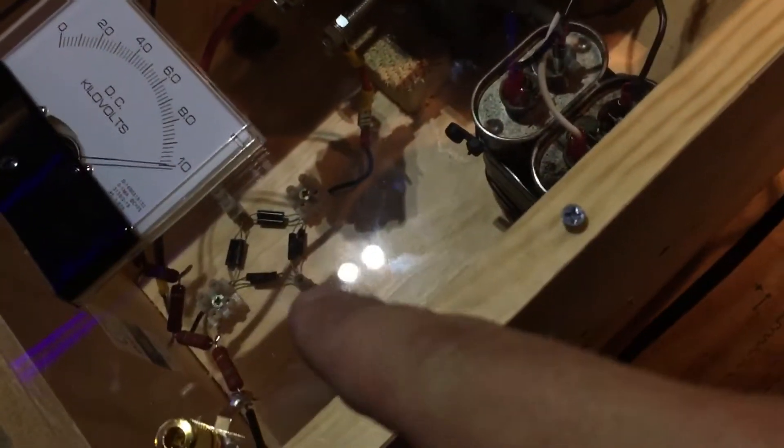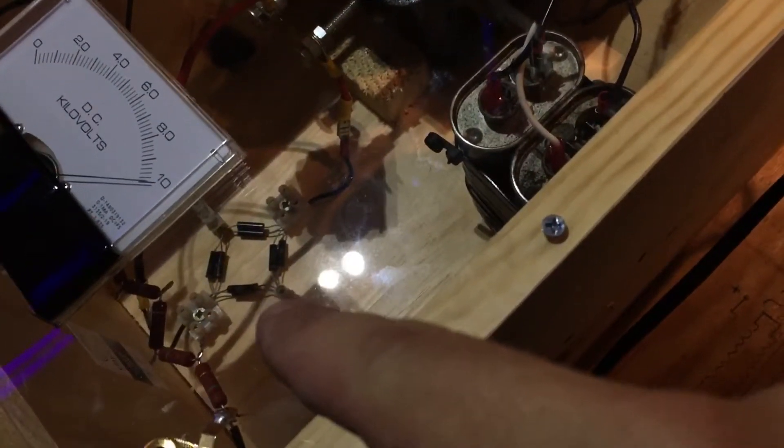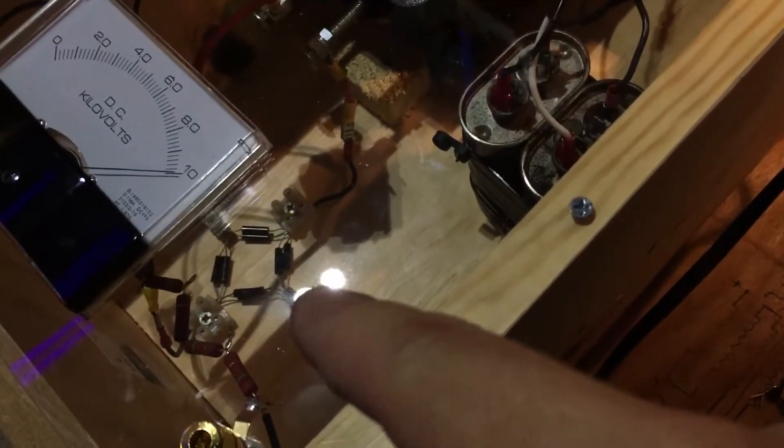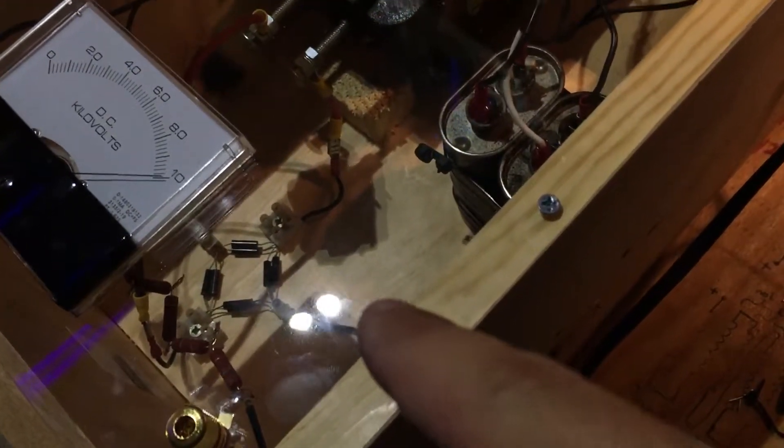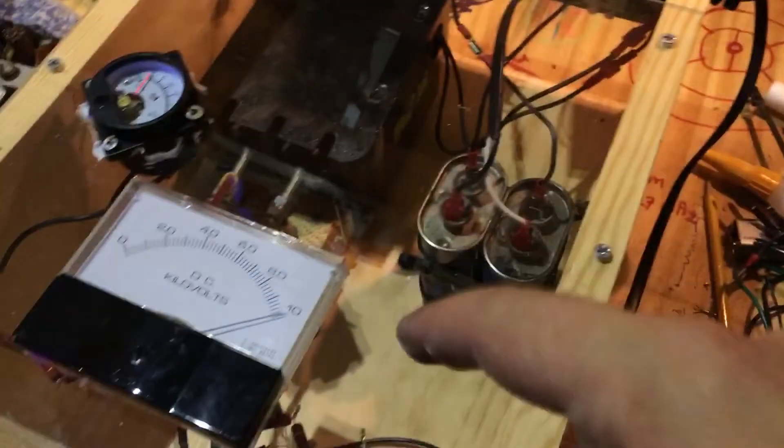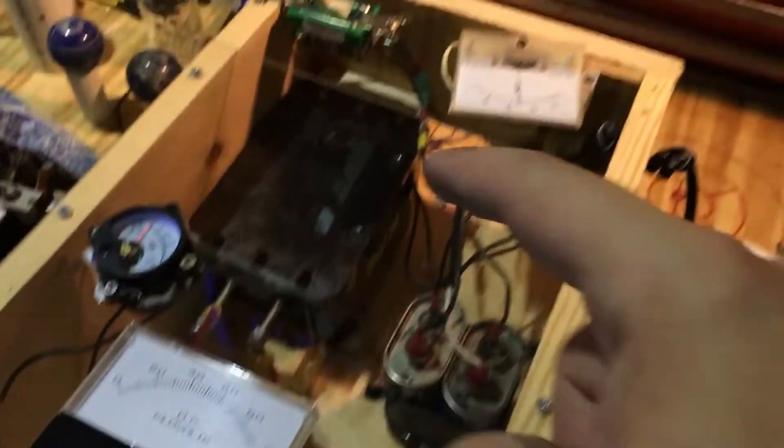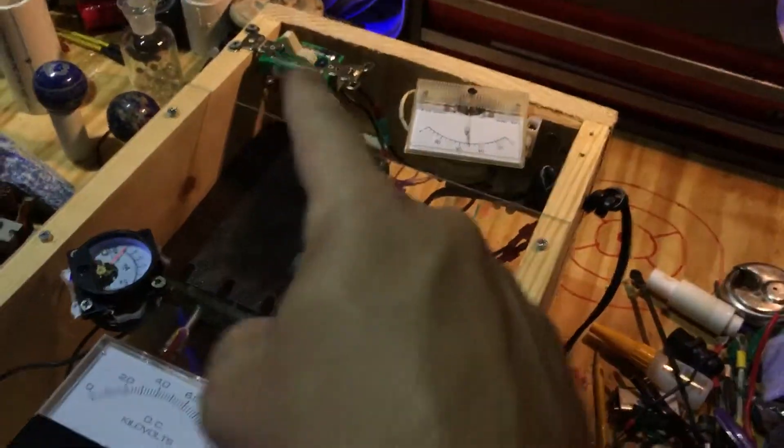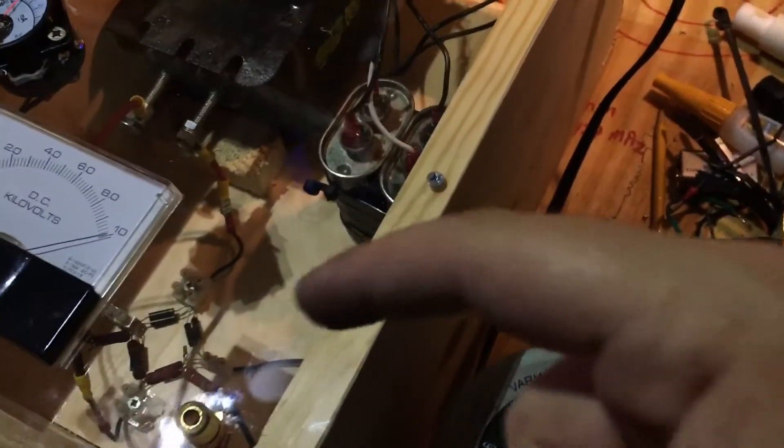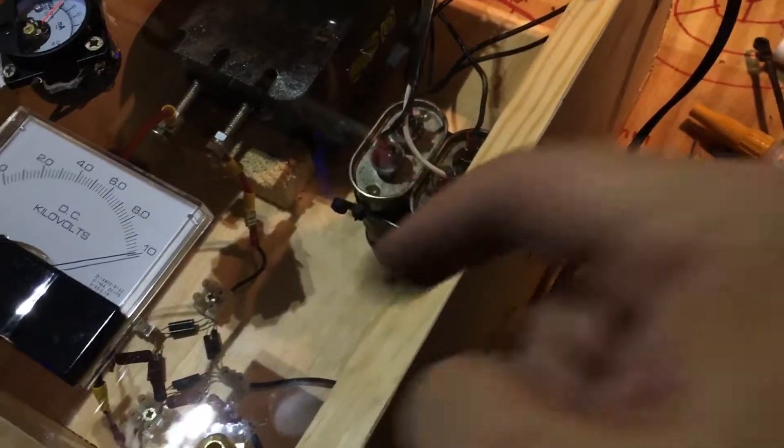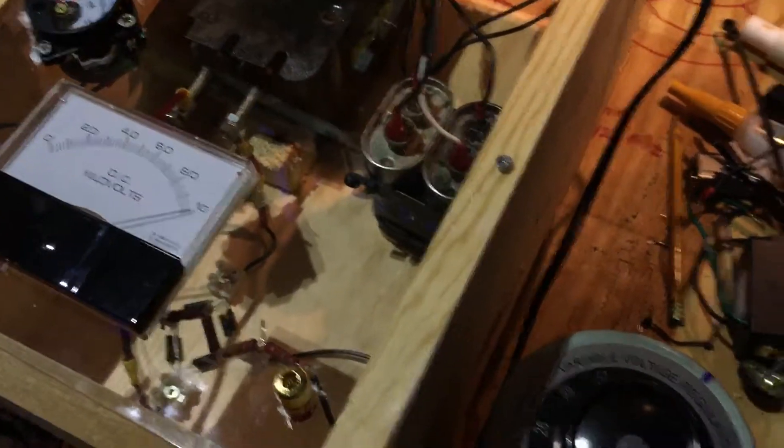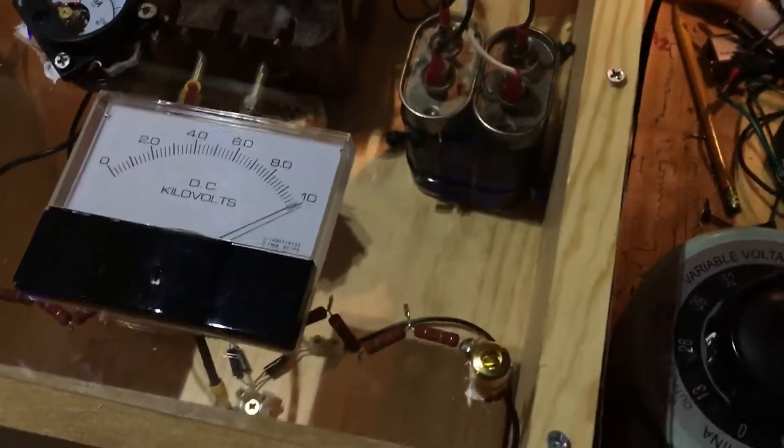It might actually cause arcing on the full wave bridge rectifier that's comprised of 8, 15 kilovolt, 100 milliamp, 100 nanosecond diodes in pairs of two. In fact, if you forget to plug the Variac in and plug that directly in and plug this thing, the high voltage side in directly and flip the switch, it's caused several little arcs to actually jump a couple of the diodes for a quick second before it stopped. So that's something to be aware of.